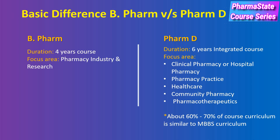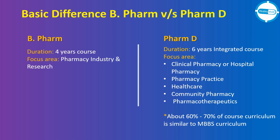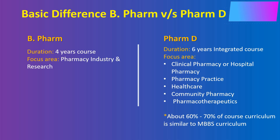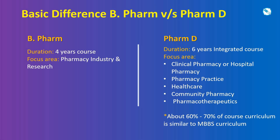The difference between B.Pharm and Pharm D: B.Pharm is a four-year course and the focus areas are pharmacy industry and research. For Pharm D, it is a six-year integrated course with focus areas including clinical pharmacy, hospital pharmacy practice, healthcare, community pharmacy, and pharmacotherapeutics. It is pertinent to note that 60 to 70 percent of the course curriculum is similar to the MBBS curriculum.